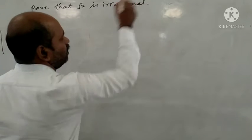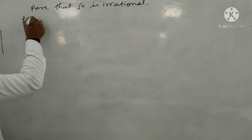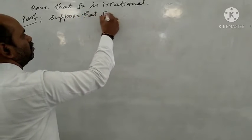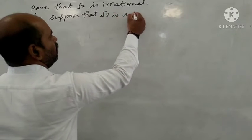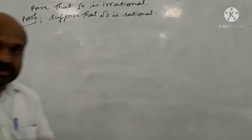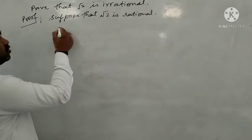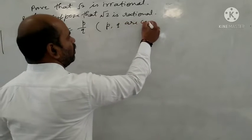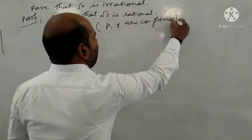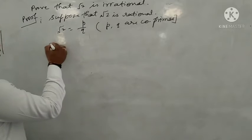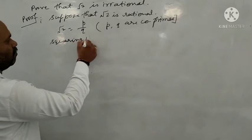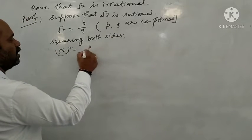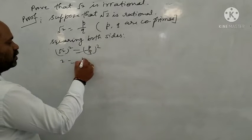Now let's use this to prove our first question. We have to prove that √2 is an irrational number. Suppose that √2 is a rational number. If √2 is rational, then it can be written as P upon Q, where P and Q are integers with no common factors, meaning P and Q are co-primes.